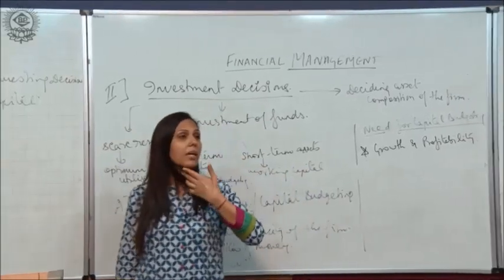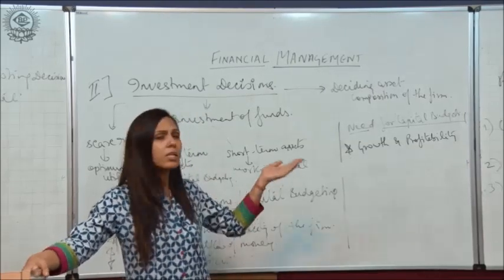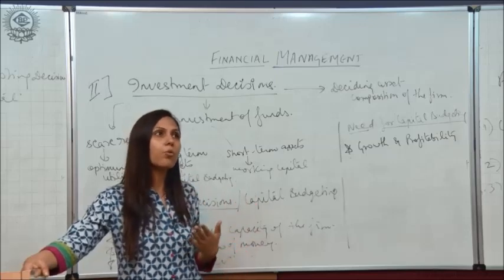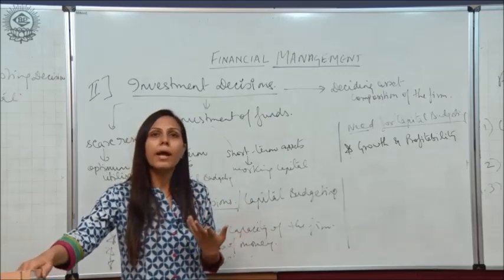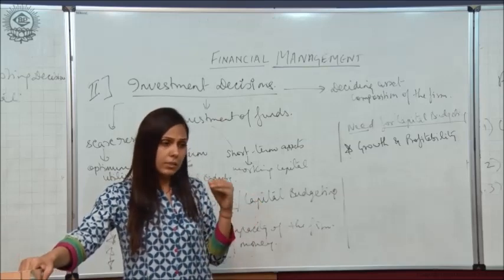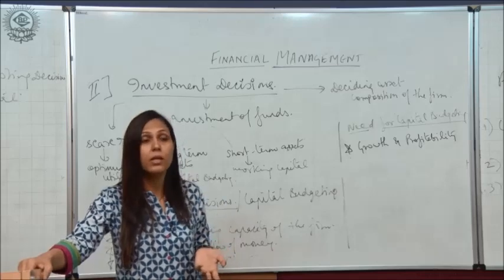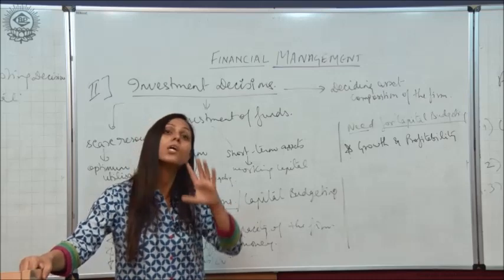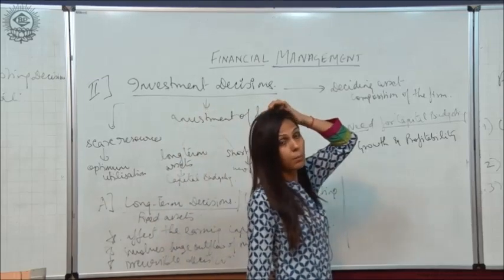Why does a company invest in fixed assets? What is the need for capital budgeting? Obviously, if you are buying a new building, more furniture, or more land, it only happens when a company is growing. Capital budgeting is required for expansion, diversification, and growth purposes. So if a company is buying more and more fixed assets, it shows that the company is actually growing and expanding.